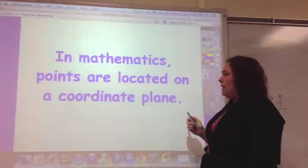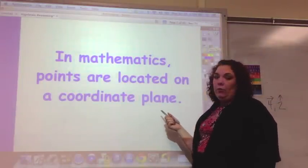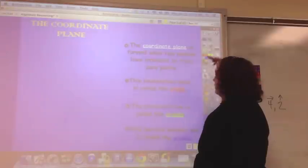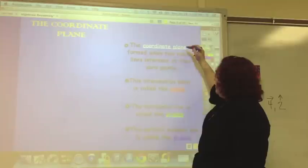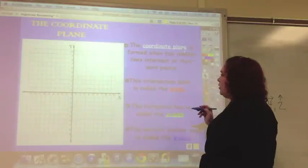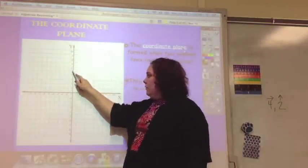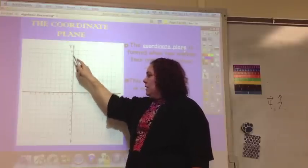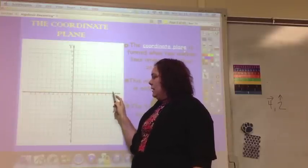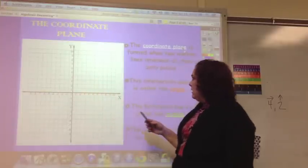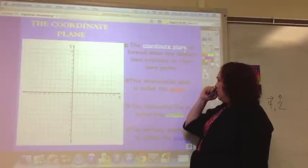In mathematics, points are located on a coordinate plane. A coordinate plane is formed when two number lines intersect at their zero points. So, this number line starts 0 to 10, and this one 0 to 10, and where they intersect is the coordinate plane.